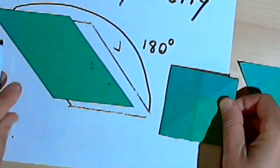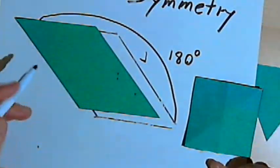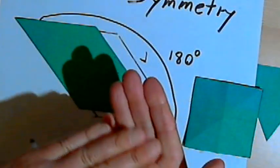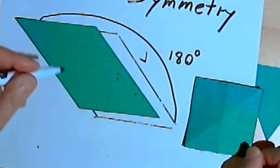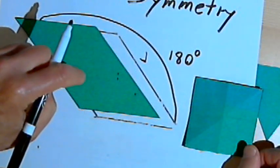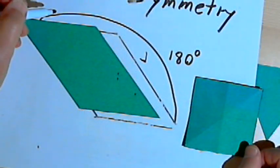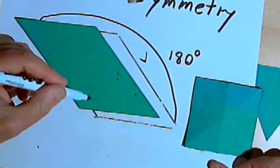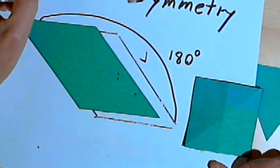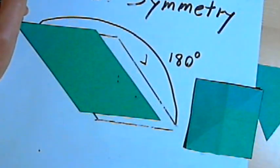So we've got reflection symmetry, where you've got a line of symmetry, you fold an image on itself, and then we've got rotational symmetry, where you rotate an image around. And within rotational symmetry, if you can rotate it 180 degrees and have it be symmetrical, then it's also called point symmetry. Okay? And that's it. Take care. I'll see you next time.